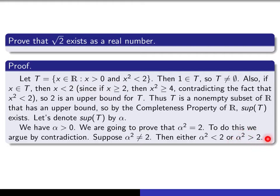When we assume alpha squared is bigger than 2, I'll show we can make alpha a little bit smaller and still have a square bigger than 2. That smaller number would then be an upper bound for T, giving us an upper bound smaller than alpha — contradicting the fact that alpha is the least upper bound of T. So now let's carry out the details of those two arguments.